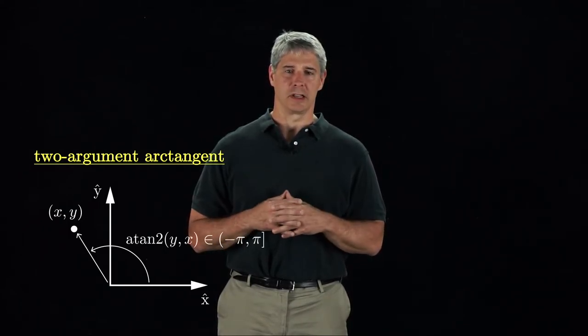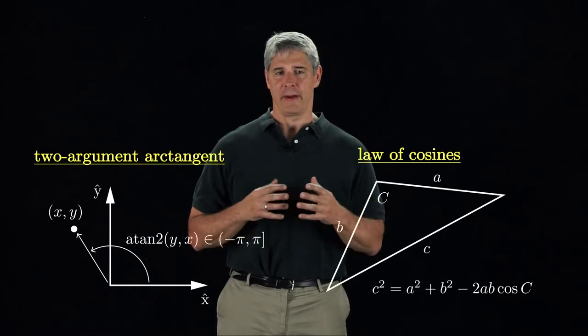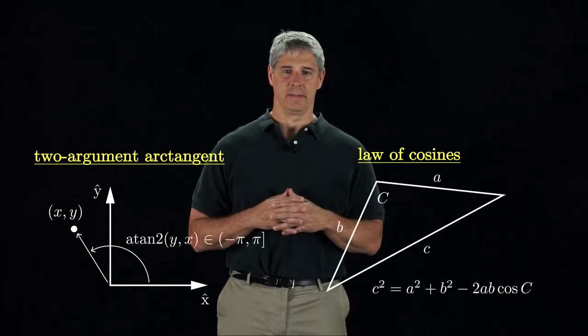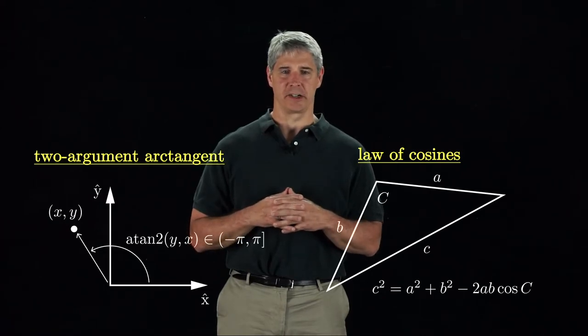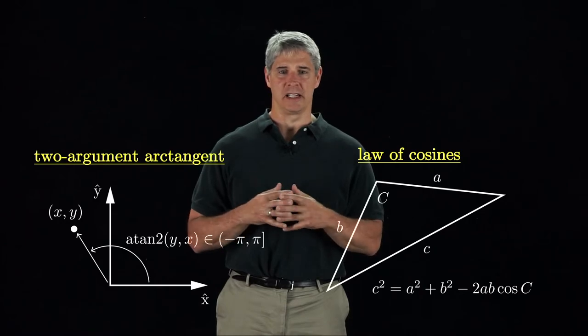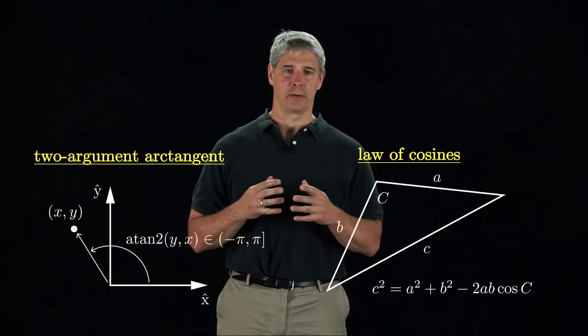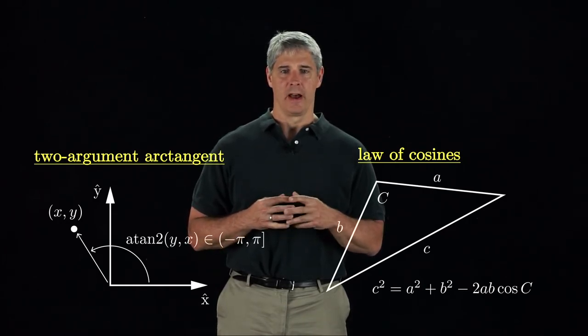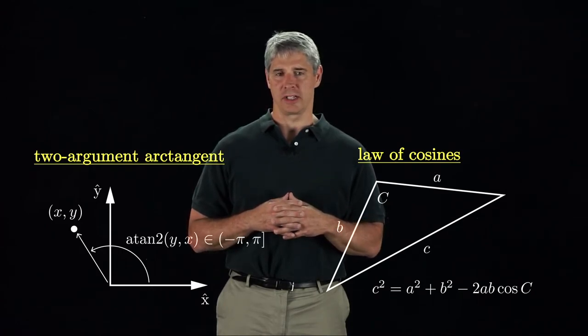Another useful tool is the law of cosines. If A, B, and C are the lengths of the sides of a triangle, and capital C is the interior angle opposite side C, then the length of edge C is given by c squared equals A squared plus B squared minus 2AB cosine of capital C.